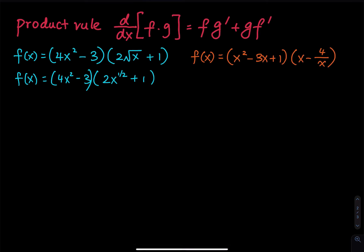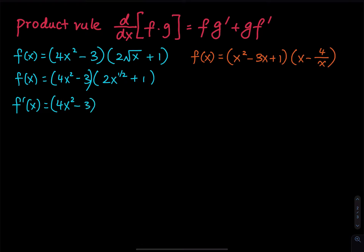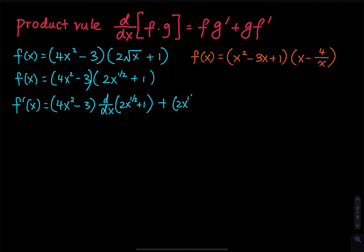So applying fg prime plus gf prime: f prime of x equals f times g prime, so we copy the first factor and then take the derivative of the second factor, d/dx of 2x to the one-half plus 1, and then plus 2x to the one-half plus 1 times the derivative of the first factor, d/dx of 4x squared minus 3.